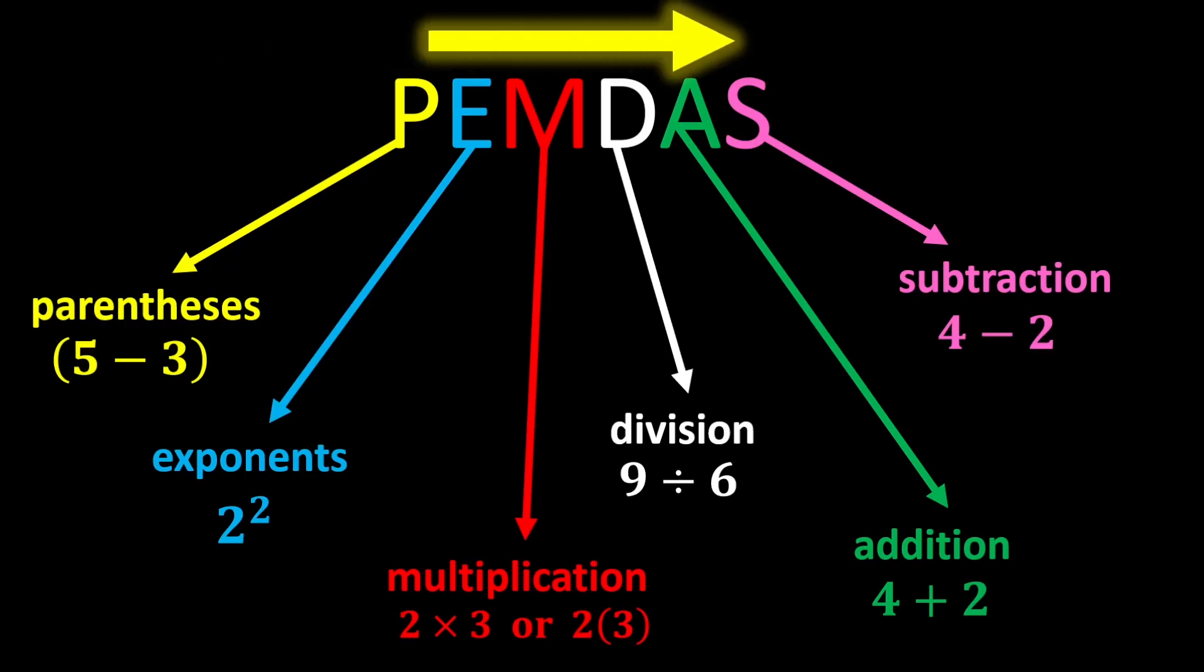Multiplication and division have equal priority, so whenever both appear in an expression move from left to right and perform whichever you reach first. This rule also applies to addition and subtraction.